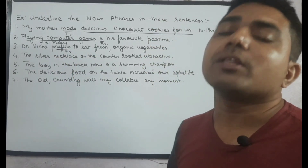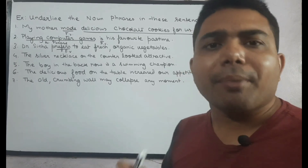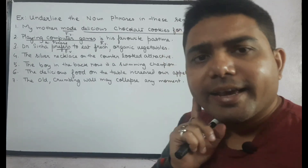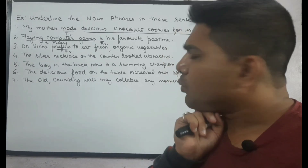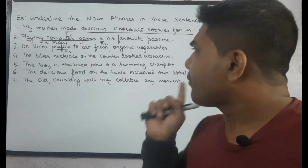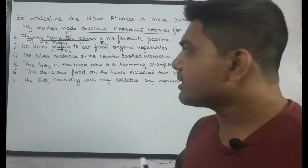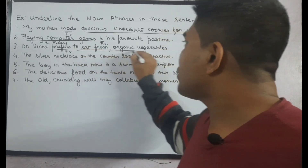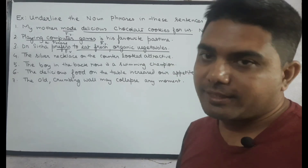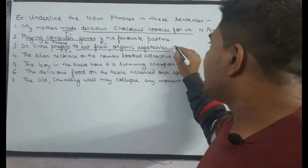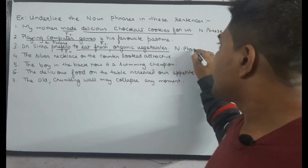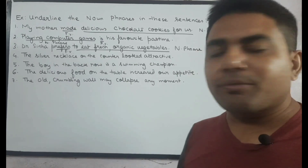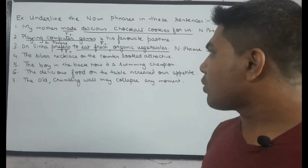Sentence number three: 'Dr. Sinha prefers to eat fresh organic vegetables.' Let's question the verb with 'what': Dr. Sinha prefers what? The answer we are getting is 'to eat fresh organic vegetables,' so 'to eat fresh organic vegetables' is the noun phrase.